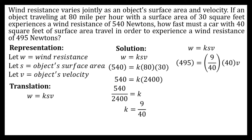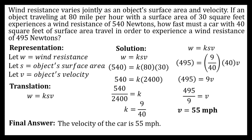Simplifying the right side by multiplying, we get 9V is equal to 495. Dividing both sides by 9, we get the velocity of the car, which is 55 miles per hour. So that will be our final answer — the velocity of the car is 55 miles per hour.